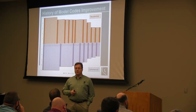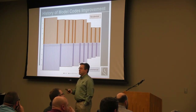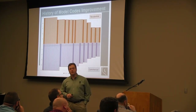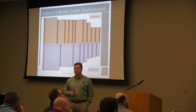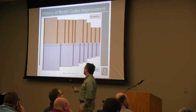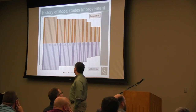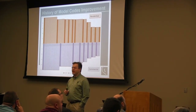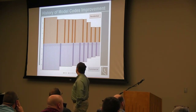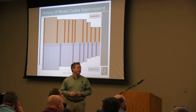This chart shows the change in energy consumption for a building over time based on which code version they're using. If our baseline building from 1975 uses 100 units of energy, prior to the major code steps buildings used around 80–85% of that energy per square foot. Then around 2010 to 2013, that dropped down to about 50% — some very major steps in both the residential and commercial codes, particularly around the 2012 time frame.